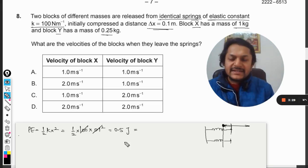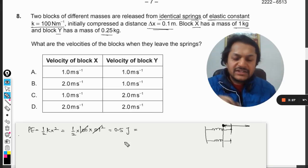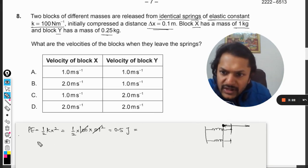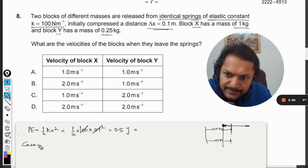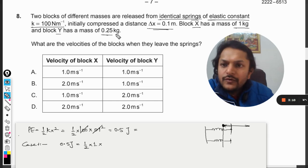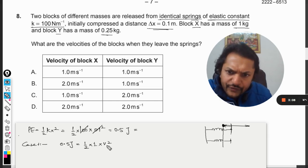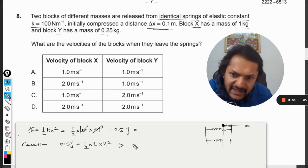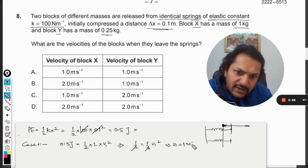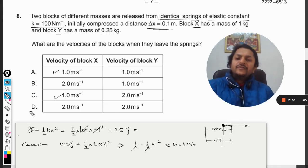Now mass is different, so this energy gets converted into kinetic energy of the mass. In case number one, 0.5 joule will be equal to half into mv squared. Mass is 1 into v squared, and velocity we need to find. I'm calling it v1, so half is equal to half into v1 squared. There we go, v1 is equal to 1 meter per second. We have got the velocity for X.